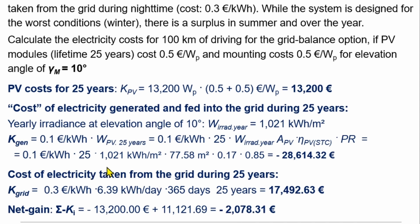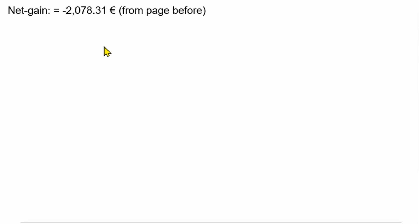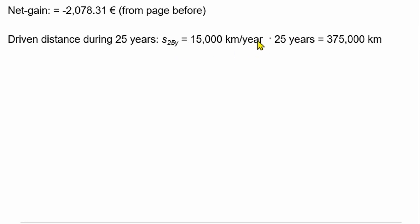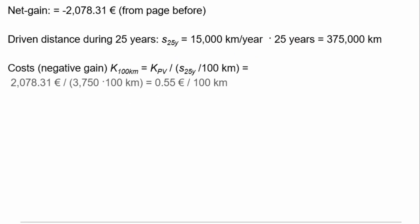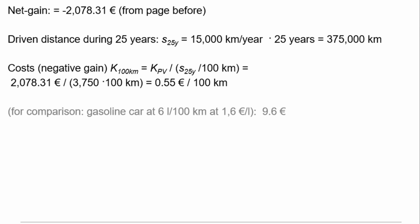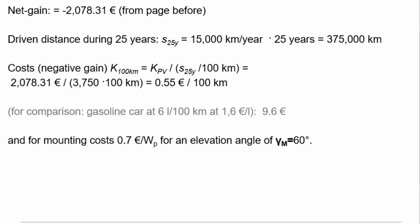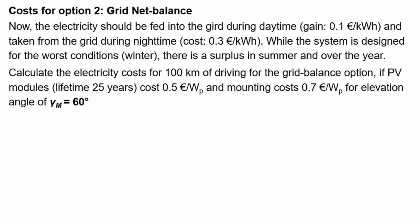So we have an additional cost of 2,078 €. Per 100 km over 375,000 km, that is only 0.55 €/100 km — extremely cheap compared to 9.6 €/100 km for a gasoline car. For the 60° elevation case with 0.7 €/Wp BOS costs, gain from utility is 18,330.71 €; electricity cost from grid is the same 17,492.63 €. The net cost is slightly higher but still very favorable compared to gasoline.